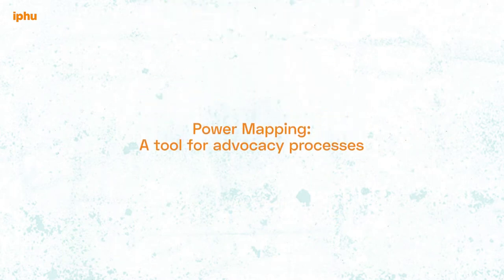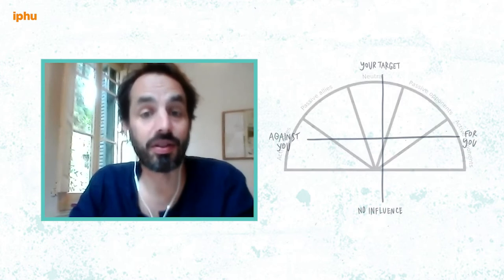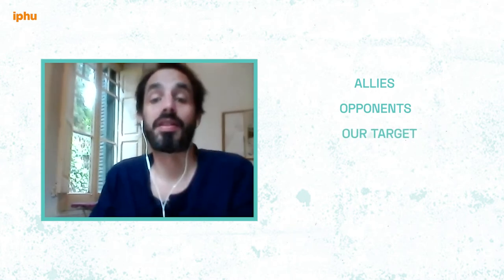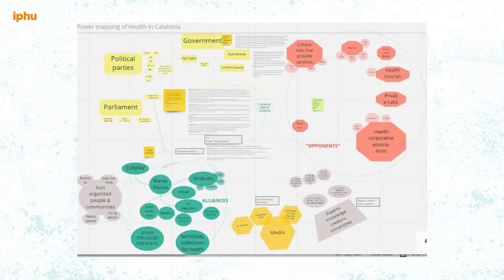A map of actors allows us to think collectively and strategically — first to diagnose our environment and then to plan our action. A kind of map that is really useful when we are willing to perform advocacy actions is what people call a power map or a map of powers. Its objective is to create a clear picture of who is who in the game. There may be many ways to make a power map, but we will use the one you see on screen as an example.